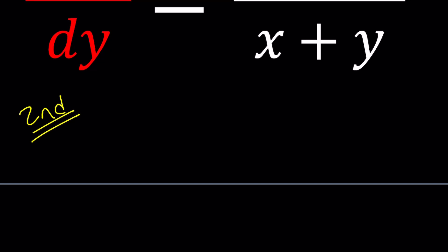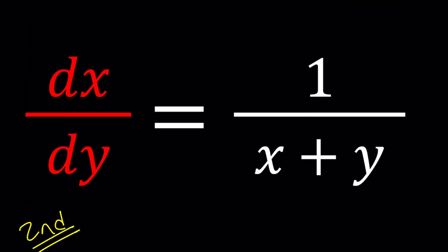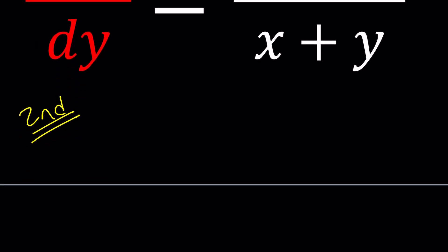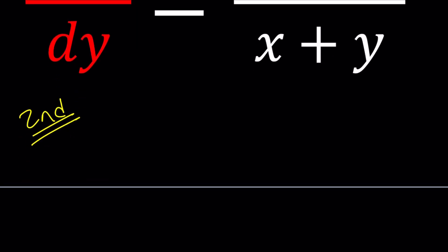First of all, I want you to take a look at this dx over dy. Is that a fraction? Some people say it's not. But dx over dy is a fraction, so we can flip it. If we flip this, it becomes dy over dx — in other words, finding the reciprocal.